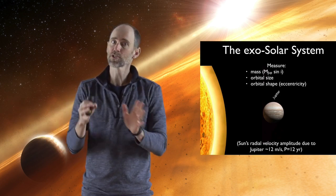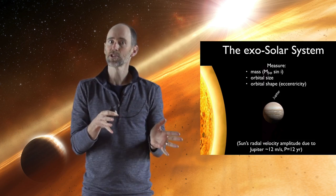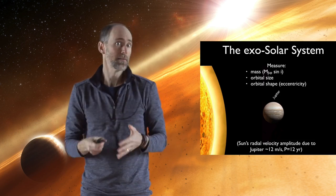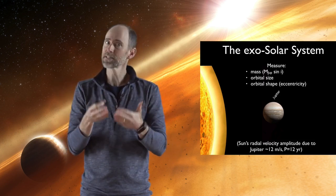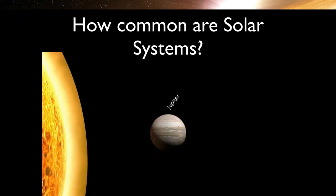So the search for other solar systems for now is the search for Sun-Jupiter systems. Yet among the known planets, we can still ask the question: how common are Sun-Jupiter systems?